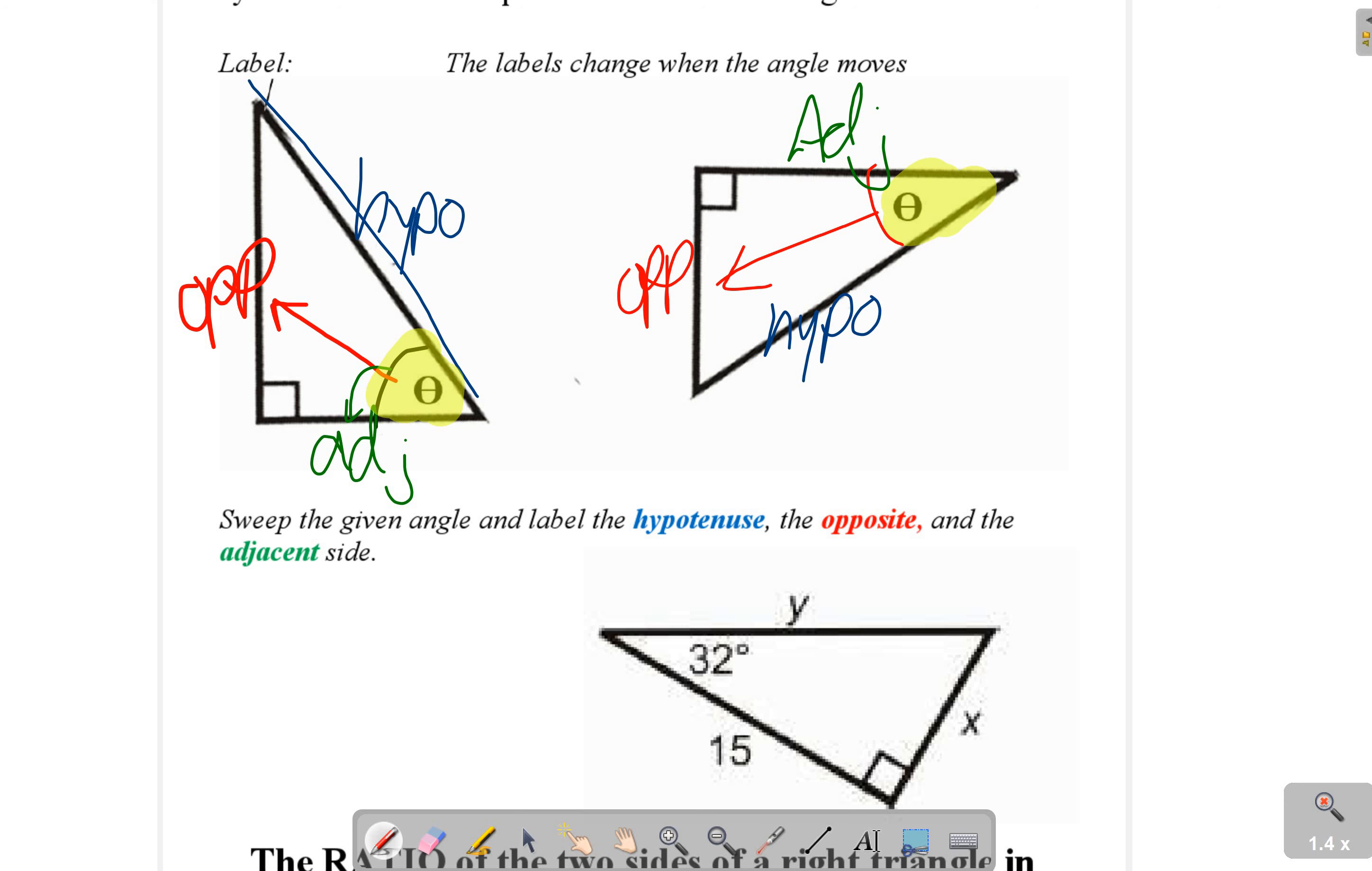So take a look down here. If this is our angle, x would be our opposite, 15 would be our adjacent, and of course y would be our hypotenuse.